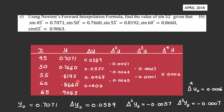Computing delta y (first differences): 0.9063 - 0.8660 = 0.0403; 0.8660 - 0.8192 = 0.0468; 0.8192 - 0.7660 = 0.0532; 0.7660 - 0.7071 = 0.0589.